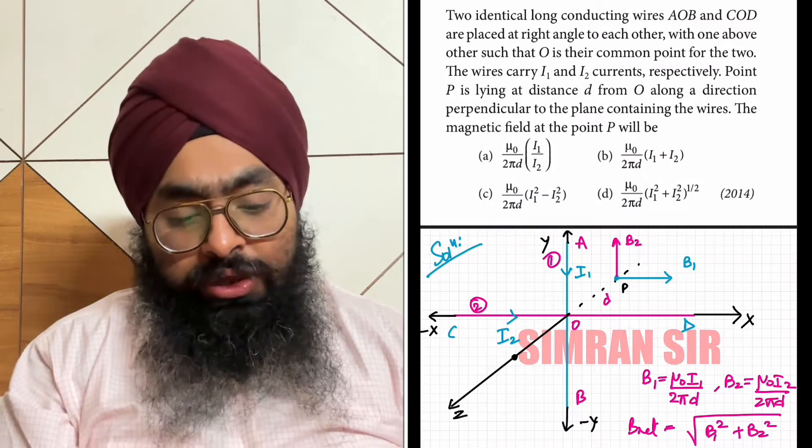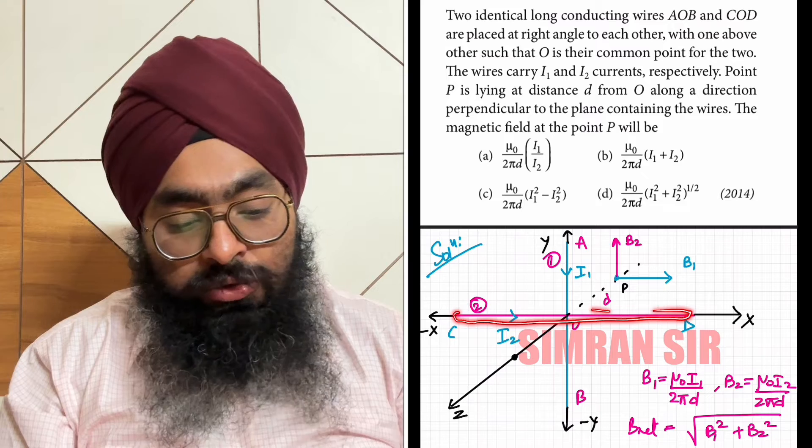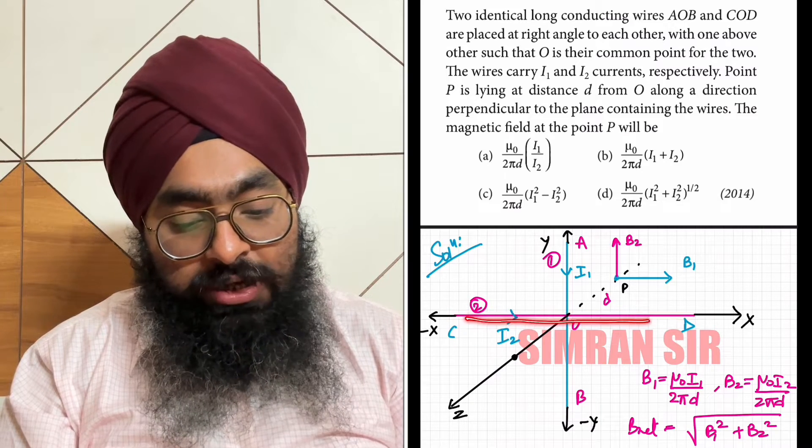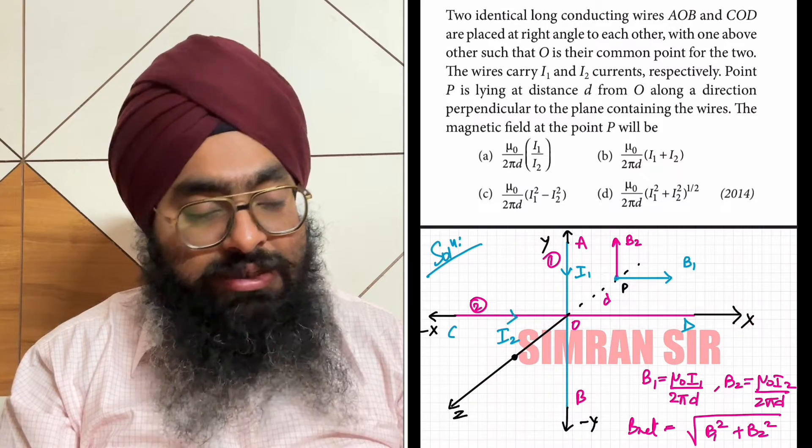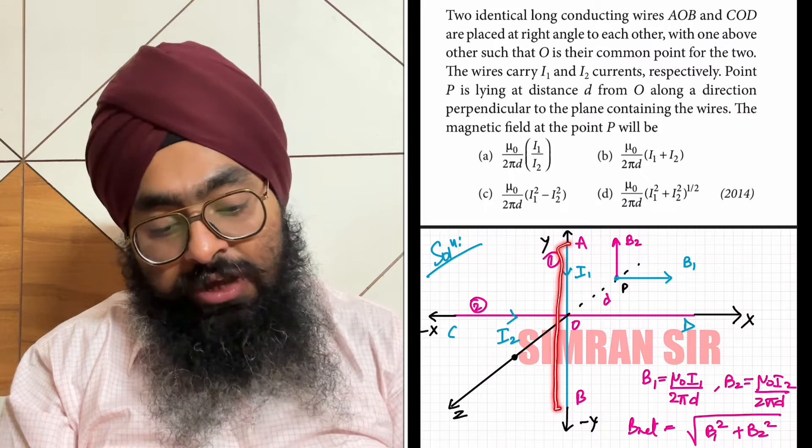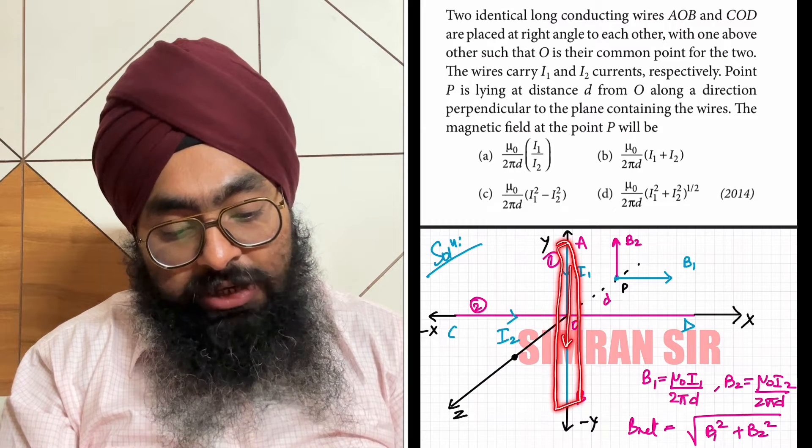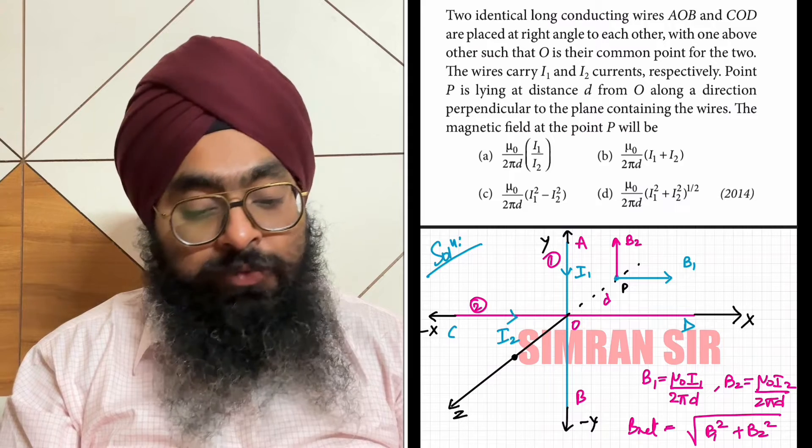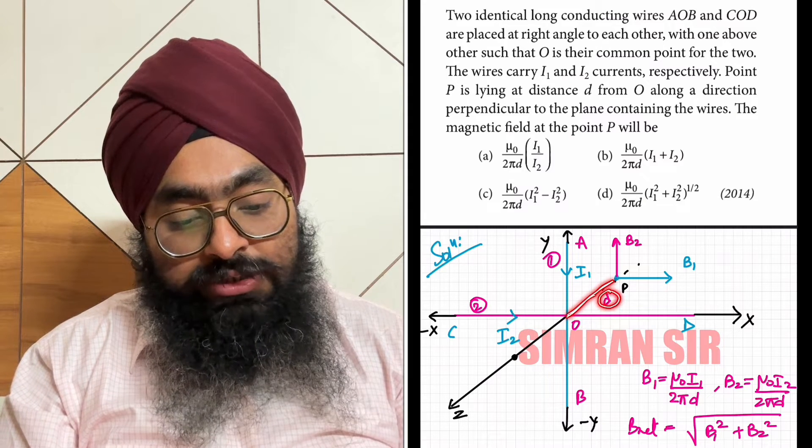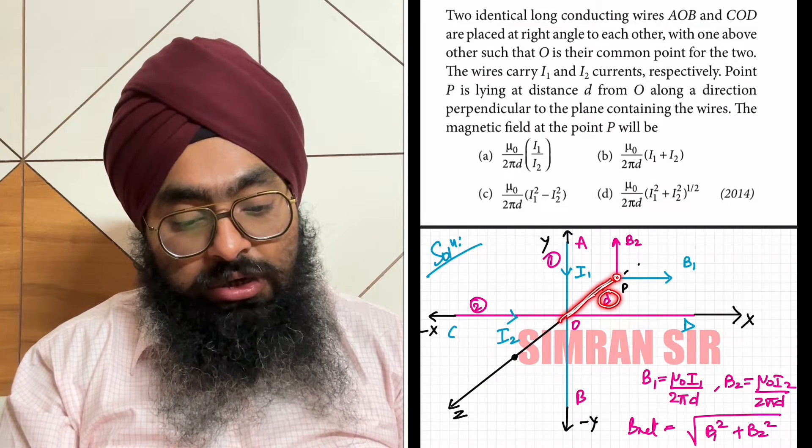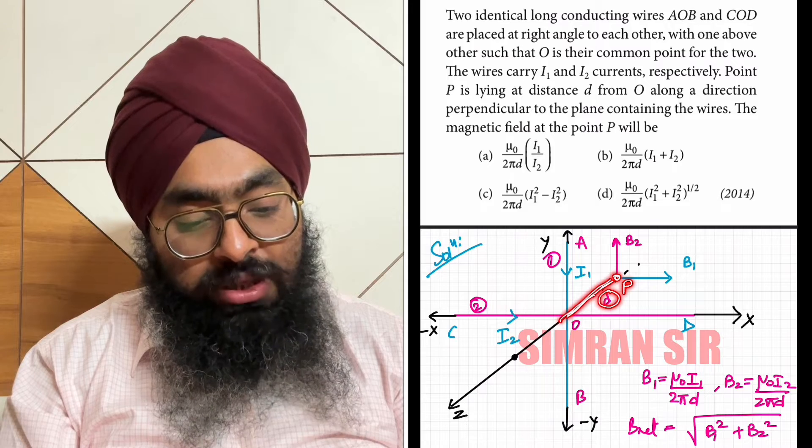Here I have made a diagram. We have wire COD, shown in pink color, carrying current i2 in the x-axis direction. The other wire is AOB, carrying current i1. Point P is at perpendicular distance d from both wires.